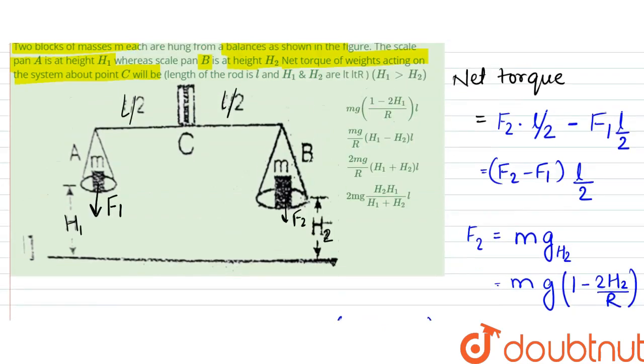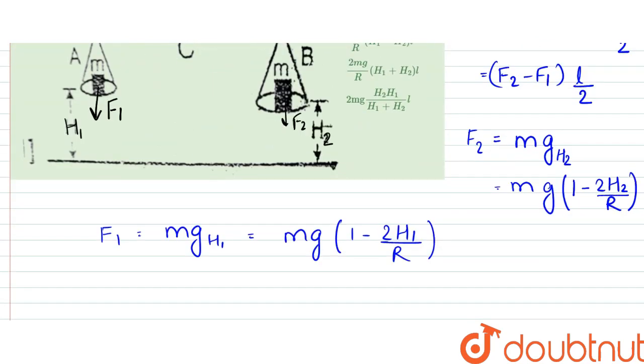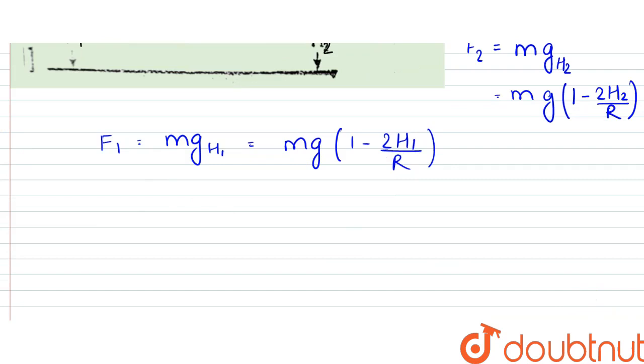R is the radius of Earth. Now, from here, what we can say is that when we use this in the net torque formula,